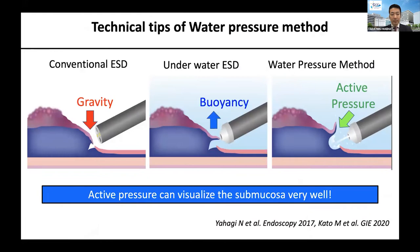This schema shows the concept of the water pressure method. In duodenal ESD, the submucosal layer is difficult to visualize even after making a mucosal incision due to gravity. After filling the inside of the duodenal lumen with saline, the mucosal flap is floated by the buoyancy force. Water pressure using saline solution through the water jet channel further expands the submucosal space and improves visualization of the submucosal layer, making it easier for the endoscope to penetrate the submucosal layer and allowing treatment to be performed under stable conditions.